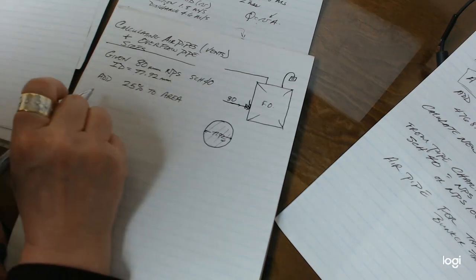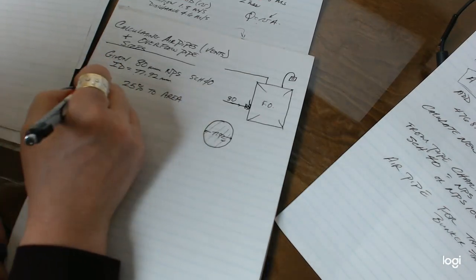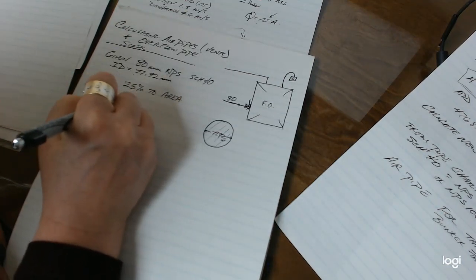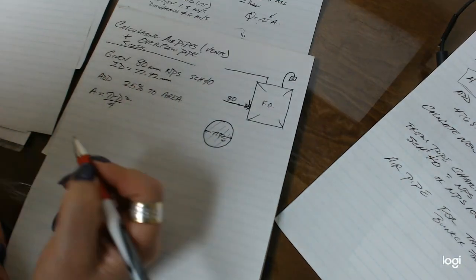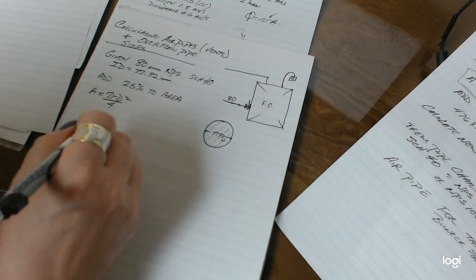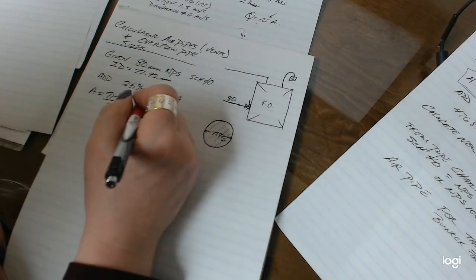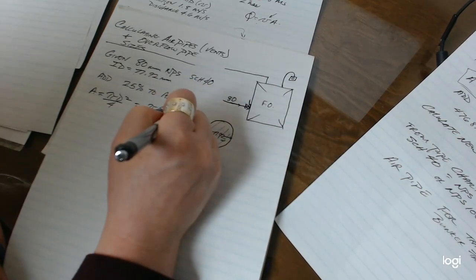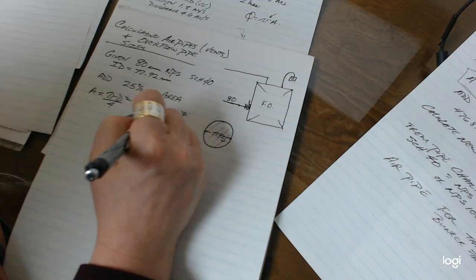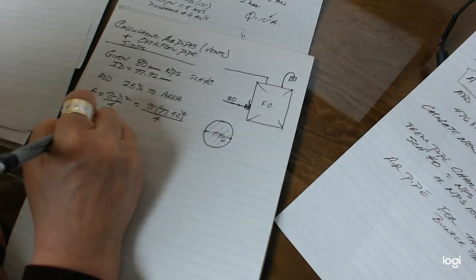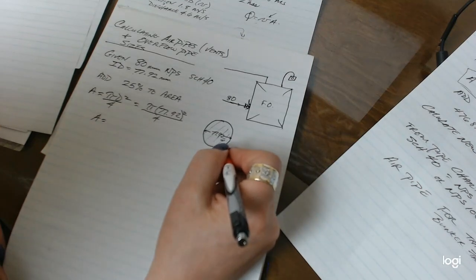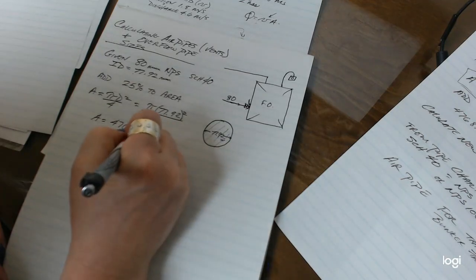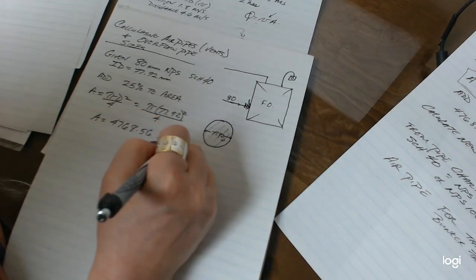So when we are looking at this scenario, first of all, what we're going to do is we're going to calculate using A equals pi D squared over 4. That's your standard area of a circle for when you have the diameter. So in my case now, I'm going to calculate pi for 77.92 squared over 4. And that's going to give me an area, a calculated area for this particular pipe at 4768.56 millimeters squared.